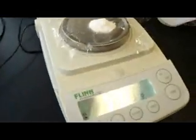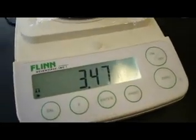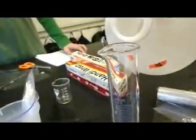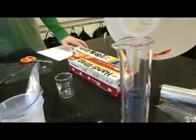We began this station by measuring out 3.25 grams of baking soda on plastic wrap. Then we measured out 50 milliliters of vinegar in a graduated cylinder, as shown here.